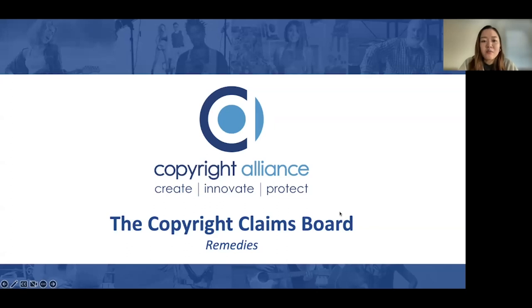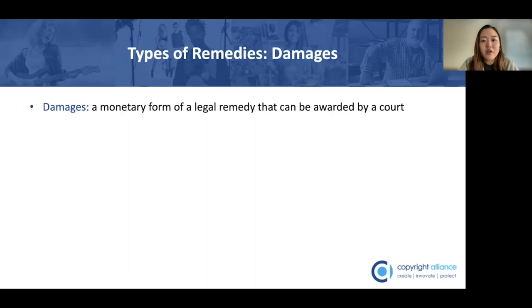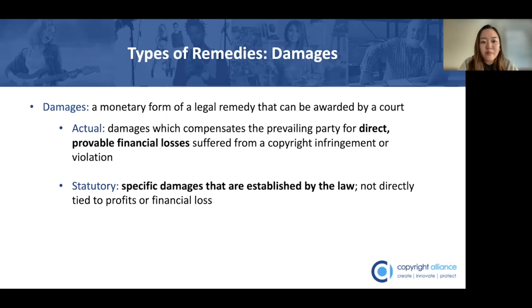Before we discuss remedies that are available at the CCB, let's talk about the remedies that may be awarded by a federal court in copyright infringement cases. So let's start with actual damages. The term damages is used to refer to a monetary form of legal remedy that can be awarded by a court. There are two kinds of monetary damages that can be awarded by a federal court in a copyright infringement case: actual damages and statutory damages.